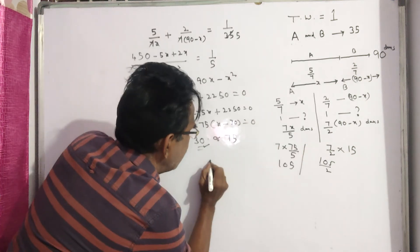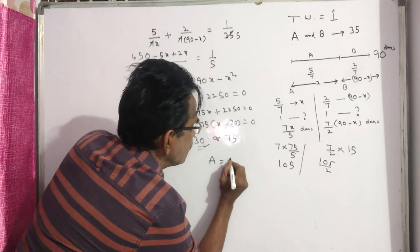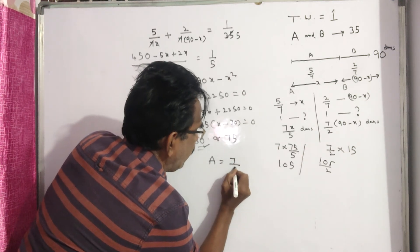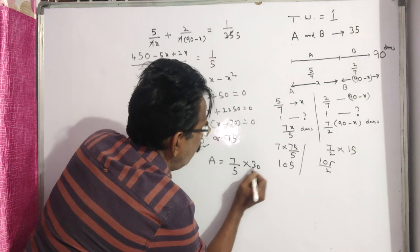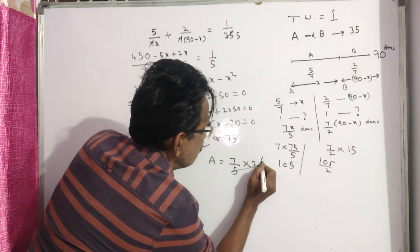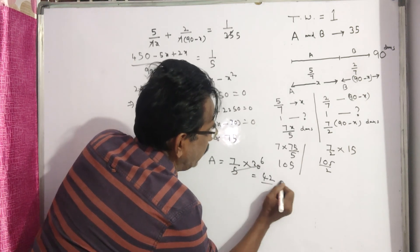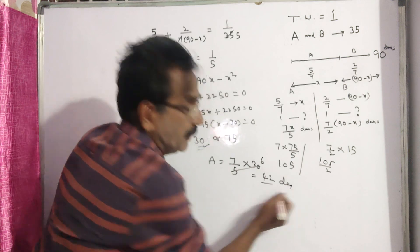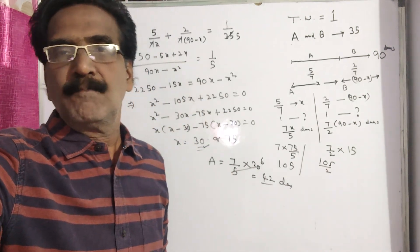So A can complete in 7X/5 — that is 7 into 30 by 5, which is 42 days. Friends, 42 days is your answer. Thank you friends, have a nice day.